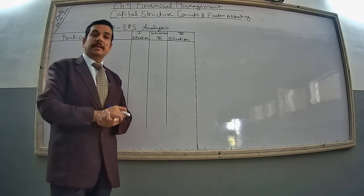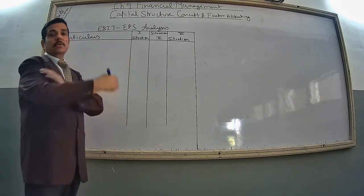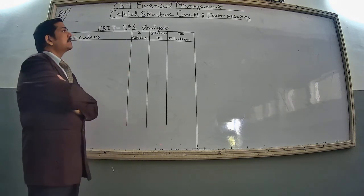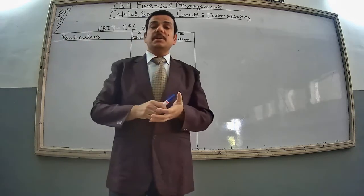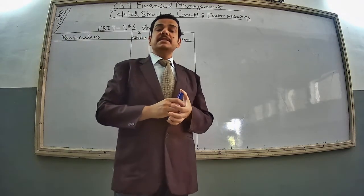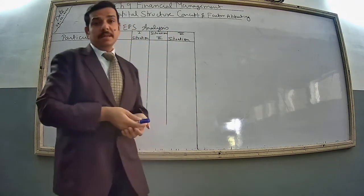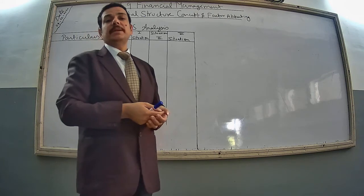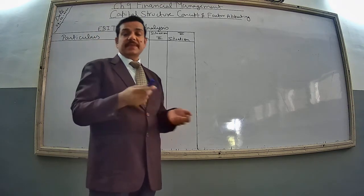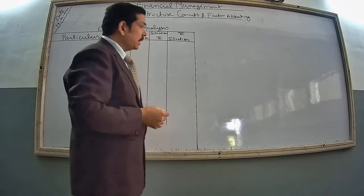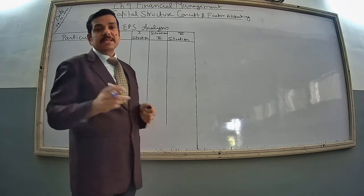Welcome back to the business study class. Our chapter going on is Chapter 9: Financial Management. Today we are going to study the capital structure concept and factors affecting it. In the previous class I gave you the introduction about financial planning, so I am giving a quick revision of that. Financial planning is a process of estimating the fund requirement of the company and specifying the sources from where you are going to arrange that money.